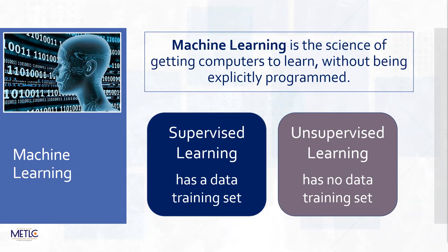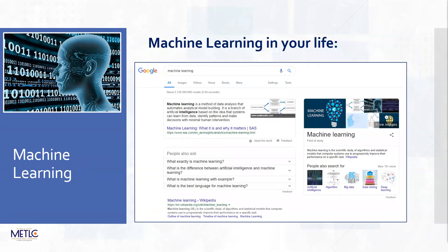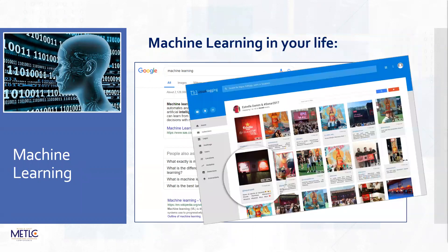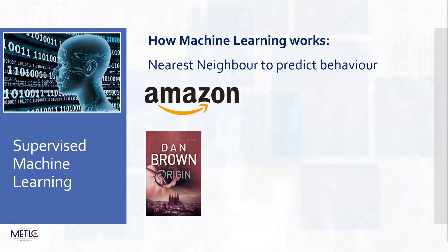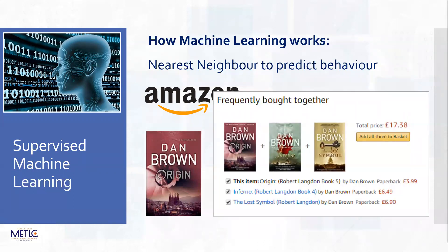What really concerns us today is supervised learning where there is a data set - you're used to this from when you use Google and look up research, or it makes suggestions, or there's visual tagging. All the visual tagging software uses a data set - you've taught it what you look like and then it will find you or your friends. It's what sorts out your junk box in your email, and you come across it on platforms like Amazon where you choose one book by Dan Brown and it will give you a few more, based on what other people have chosen. It's called a nearest neighbour predictability factor.